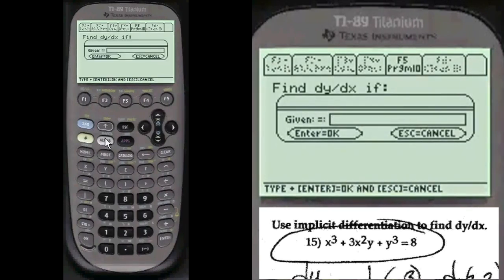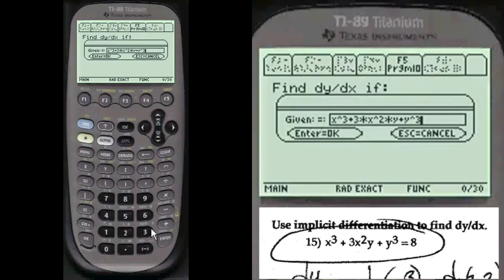And we're going to add the function or equation. You have to press alpha before you enter anything into my entry lines in my program, so we're going to press alpha and put in x cubed plus 3 times x squared times y plus y cubed equals 8.